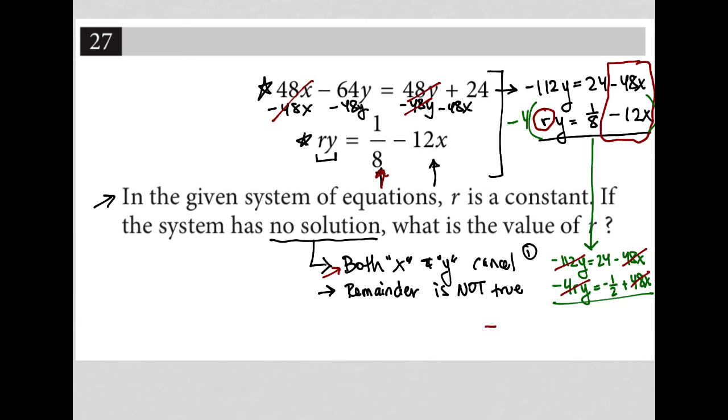Negative 4r would need to equal positive 112, because if it were positive 112, then it would cancel out the negative 112. So I'm going to divide by negative 4. I get that r equals 112 divided by negative 4, which is negative 28.